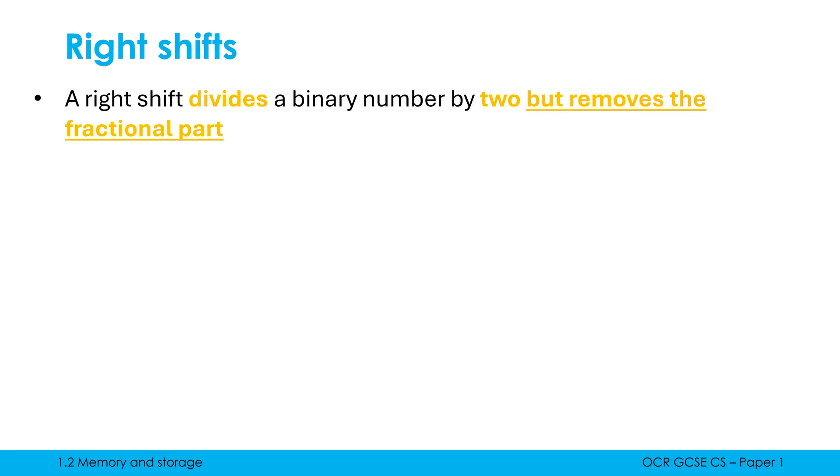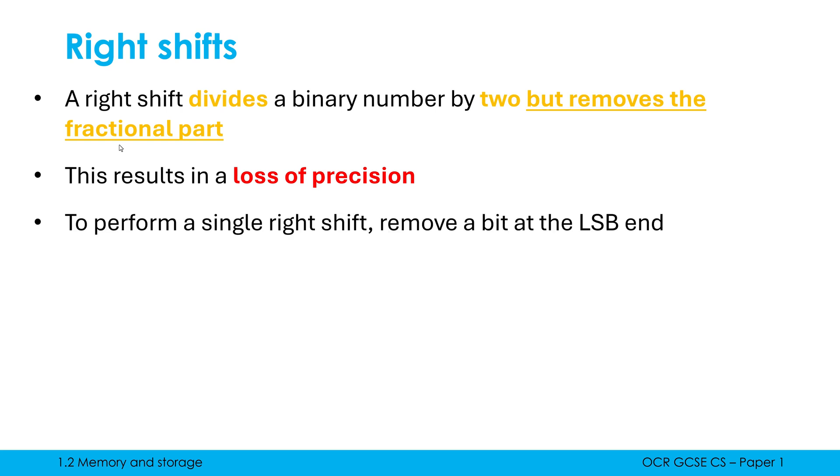A right shift divides by 2. But an additional thing to understand is it doesn't only divide by 2, we also remove any fractional parts. This results in a loss of precision. The answer isn't necessarily correct; it may lose some data when I cut off the fractional part. A right shift removes a bit at the LSB end.